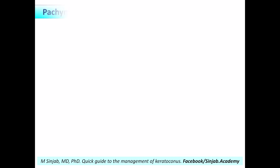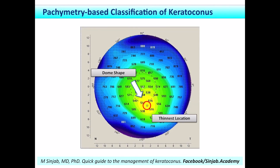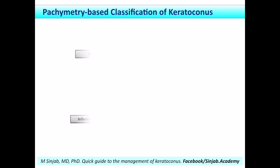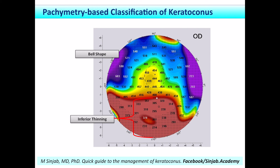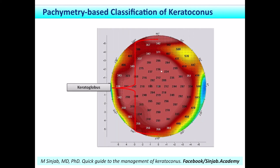The pachymetry-based classification classifies the diseases into dome shape, bell shape — which is a hallmark and very specific to pellucid marginal degeneration — and keratoglobus. This classification is very important to identify keratoglobus cases and to differentiate between pellucid marginal degeneration and pellucid-like keratoconus, as will be discussed later in detail.